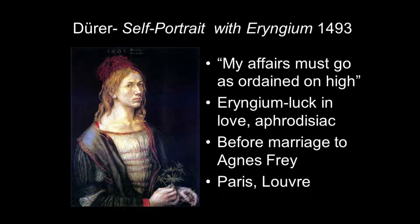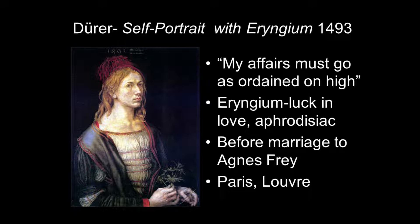This portrait has a kind of motto on it: 'My affairs must go as ordained on high.' What does that mean? It's like fate, God, the stars — whatever on high will ordain his affairs. He was evidently a very devout person. But is he saying God has laid out his life for him? Is this showing that he's not really as excited about getting married as we would like? As he says, it's an arranged marriage.